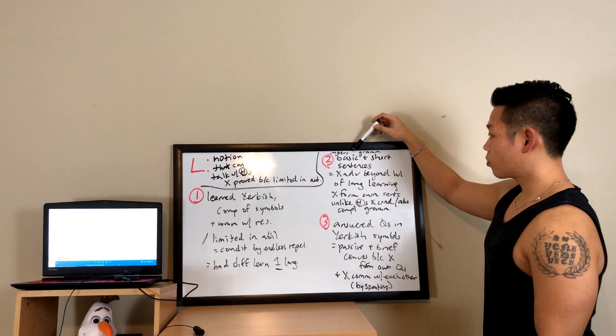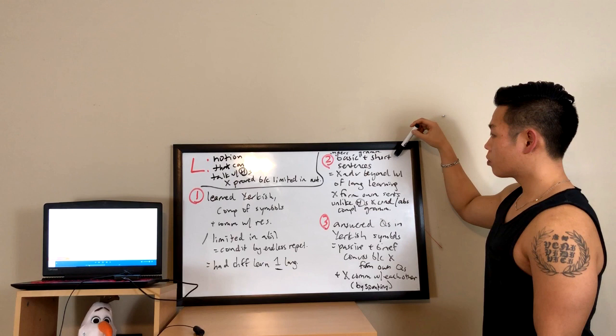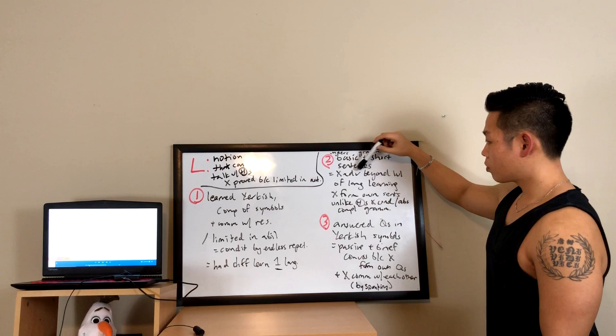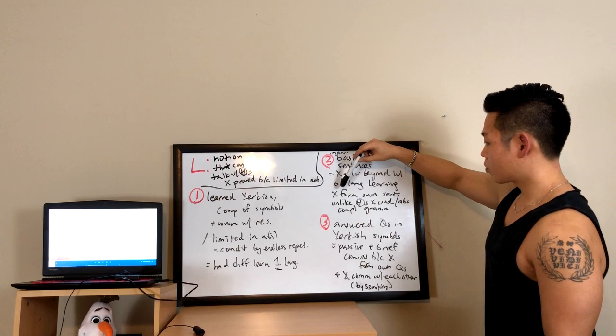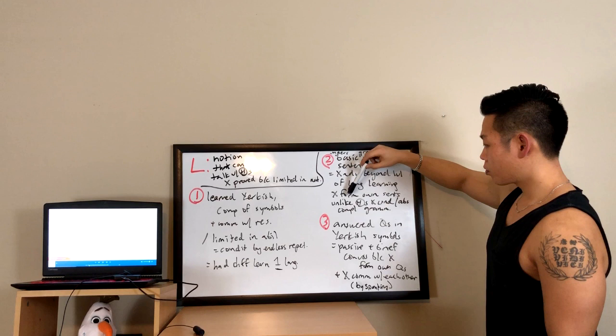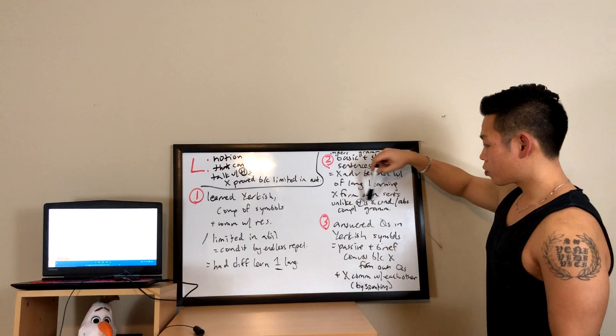Lana could understand some grammar, but it was so basic that she could only manage to create a few short sentences. She and the other test subjects never advanced beyond the beginning level of language learning. The chimps couldn't form sentences on their own unless first exposed to them by the research team, unlike humans who can absorb and understand complex grammar.